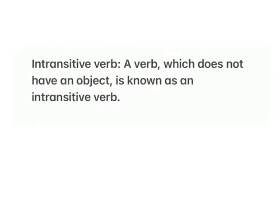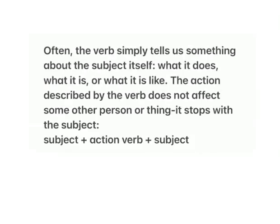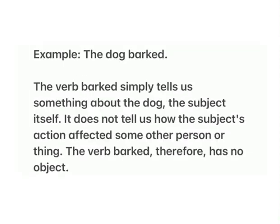Intransitive verb — a verb which does not have an object is known as an intransitive verb. Often the verb simply tells us something about the subject itself: what it does, what it is, or what it is like. The action described by the verb does not affect some other person or thing; it stops with the subject. Subject plus action verb plus subject. Example: 'The dog barked.' The verb 'barked' simply tells us something about the dog, the subject itself. It does not tell us how the subject's action affected some other person or thing. The verb 'barked,' therefore, has no object.